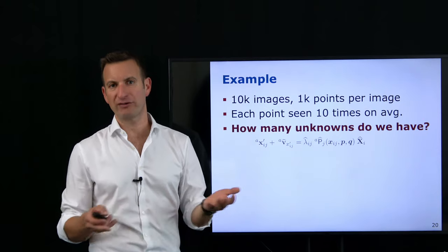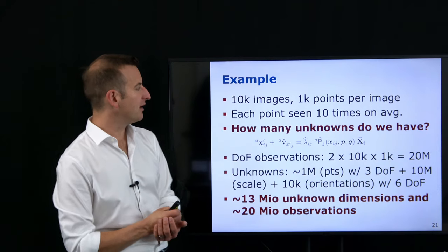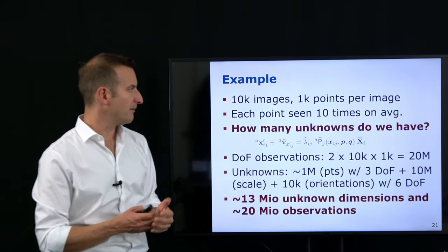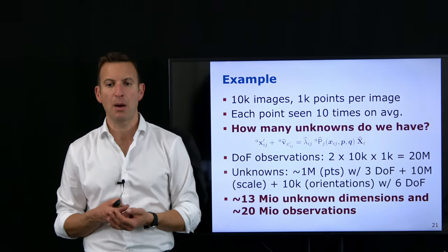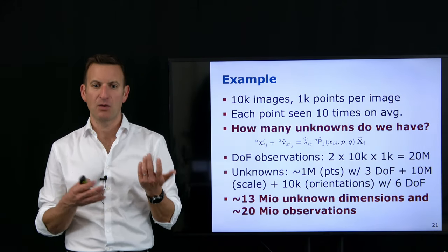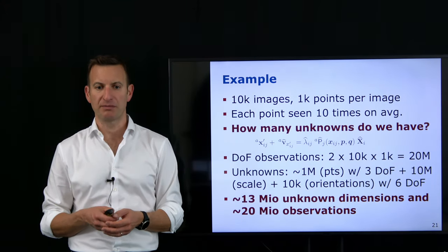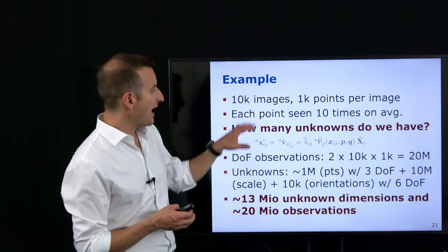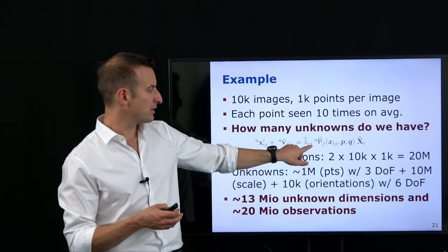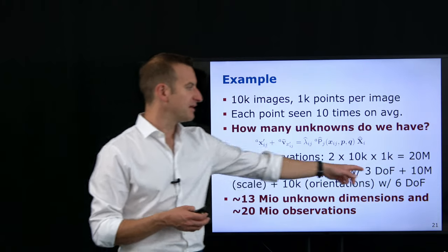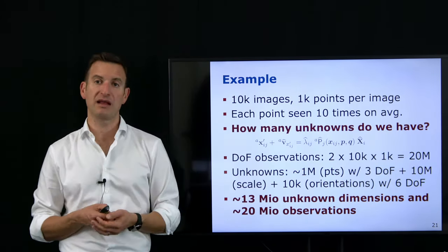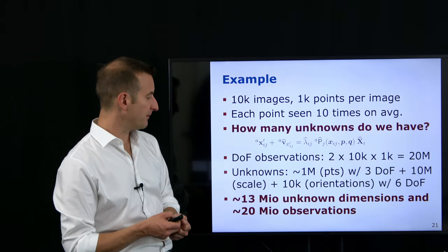Then there are a large number of unknowns for the scale parameter — one for every camera-image and feature-point pair. That means 10 million unknown scale parameters. Then I have 10,000 camera orientations with 6 degrees of freedom each. Ignoring the intrinsics for now, summing all this up gives something around 13 million unknown parameters — a 13-million-dimensional vector of unknowns and a 20-million-dimensional vector of observations. These are really, really huge numbers, and we need to find ways to bring those numbers down.